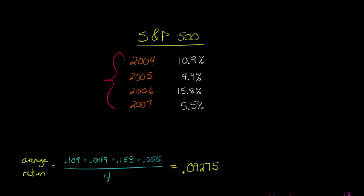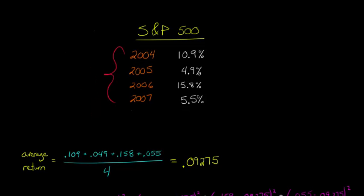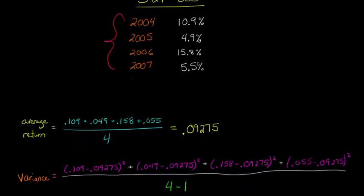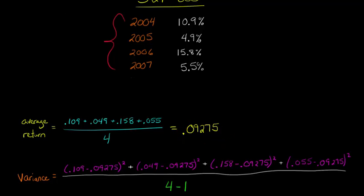But before we can get to standard deviation, we need to calculate the variance. And so we're going to need this number here, this 0.09275, that average return, we're going to need that to calculate the variance.